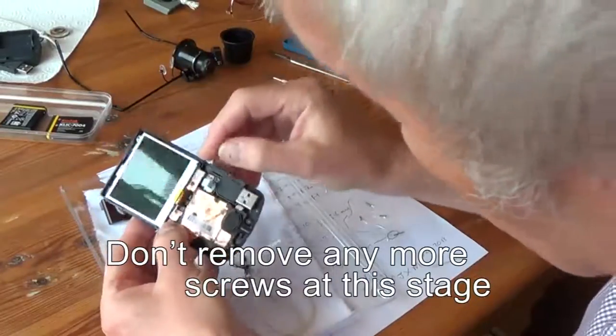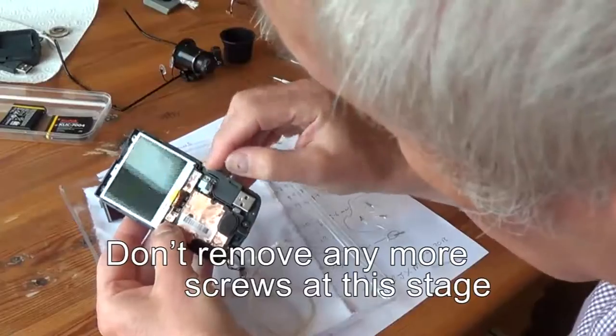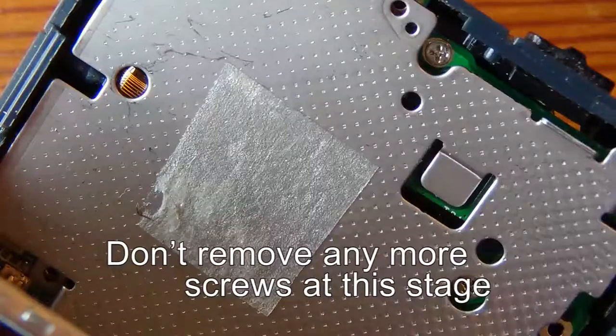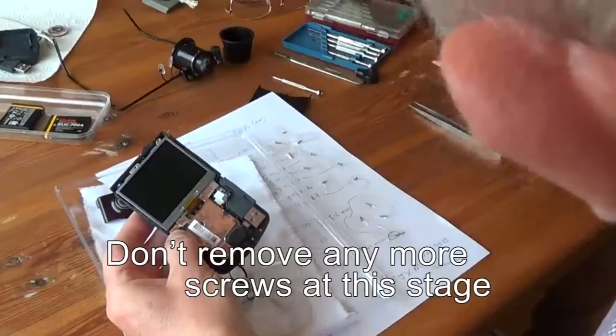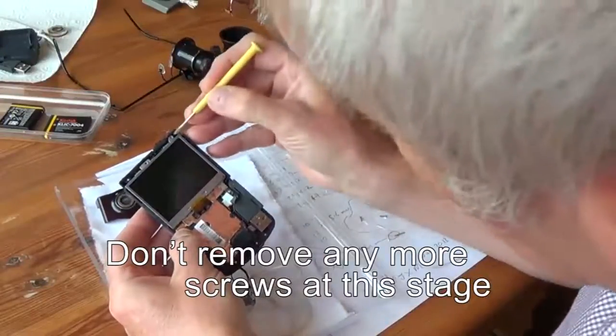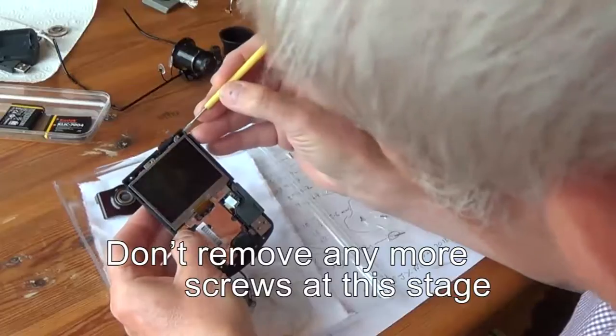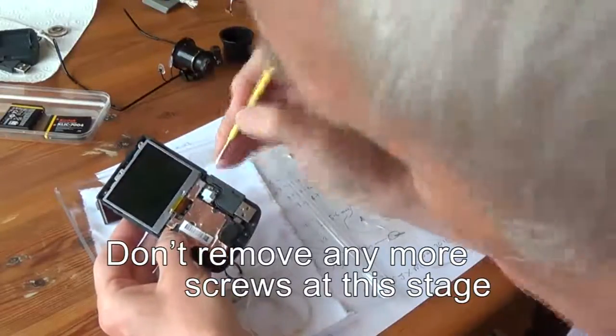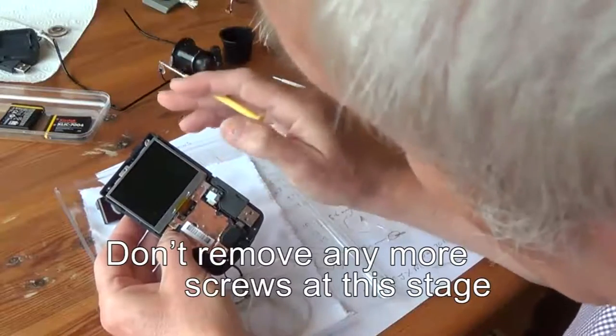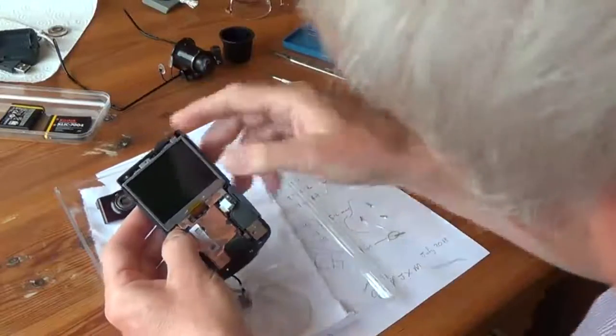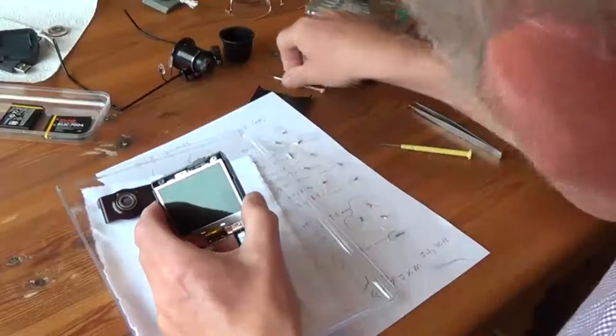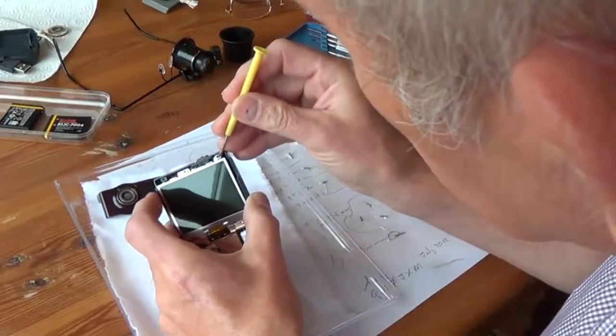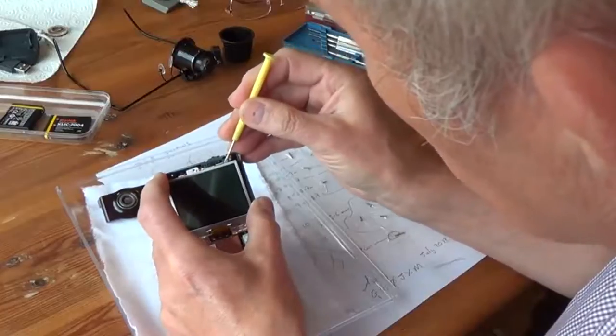The screen is held in place by a piece of double-sided sticky tape. When you get to this stage you'll see there's some other screws in here that I've removed. At this stage you don't take those screws out. What you need to do is very, very gently ease the screen away from the back panel.